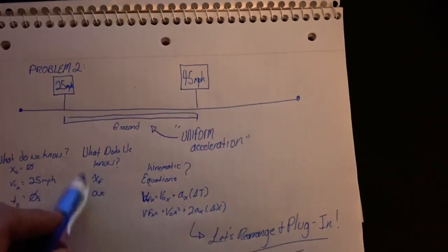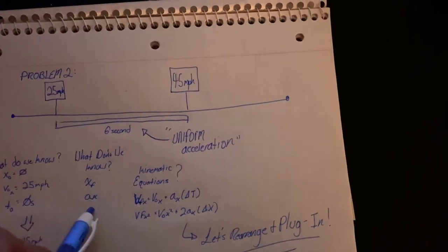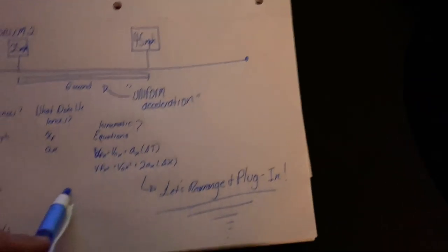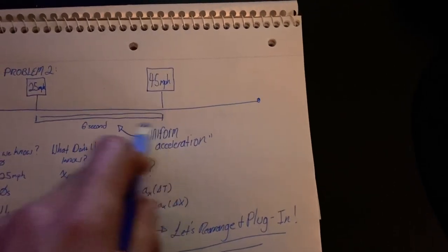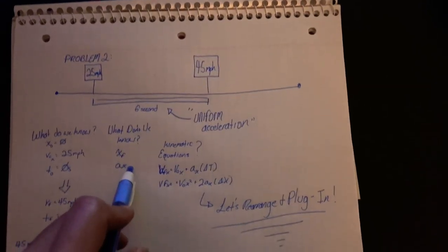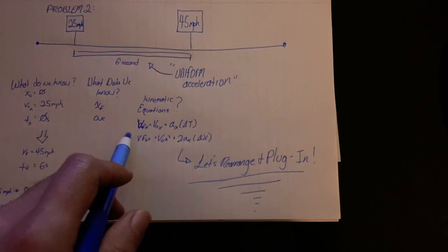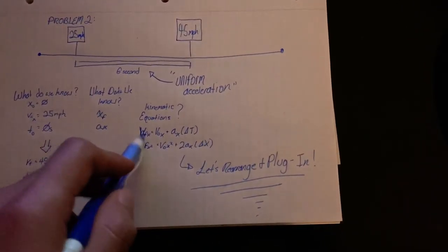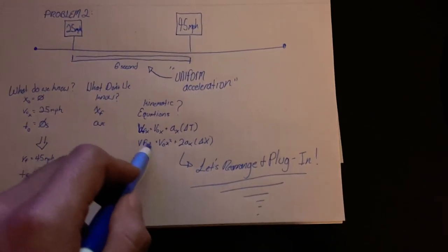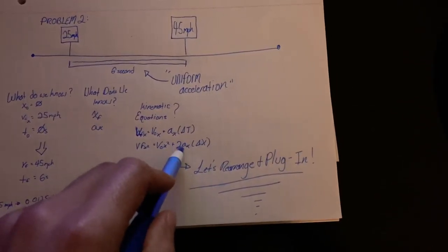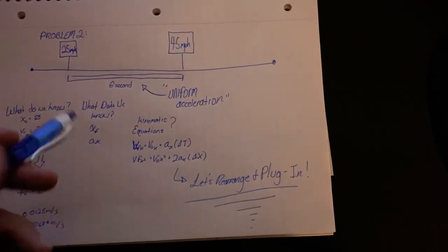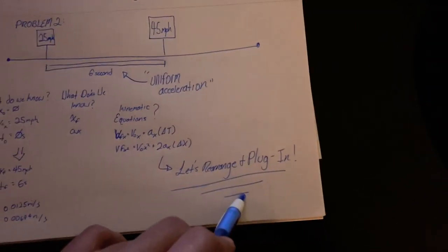What don't we know? These are our unknowns: we don't know her final position or the acceleration — that's the constant acceleration she takes to reach this point. So what we're trying to solve for is a constant, or uniform, acceleration. There are various kinematic equations we can use regarding uniform acceleration, but we're going to use the equation: final velocity equals initial velocity plus acceleration times delta t, the change in time. But we don't have all the variables we need, so we're going to rearrange this equation.